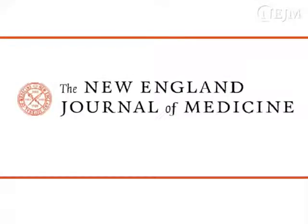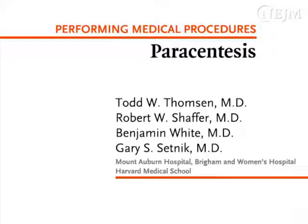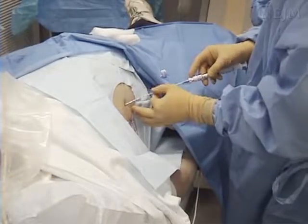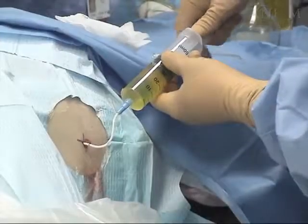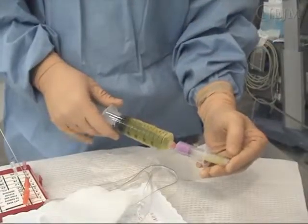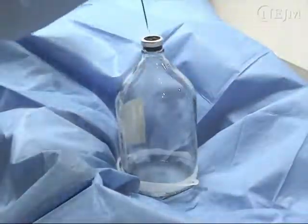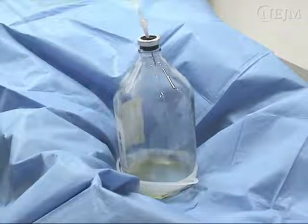This is a video in clinical medicine from the New England Journal of Medicine. Abdominal paracentesis is performed as a diagnostic procedure to establish the etiology of new onset ascites or to rule out spontaneous bacterial peritonitis in patients with pre-existing ascites. Large volume paracentesis is performed in hemodynamically stable patients with tense or refractory ascites to alleviate discomfort or respiratory compromise.